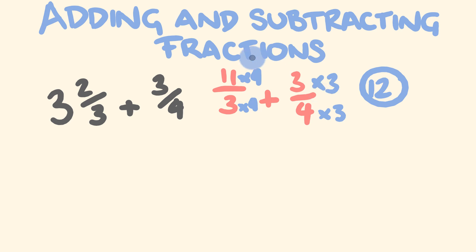So what do we get when we do all that? 11 times 4 is 44. 3 times 4 is equal to 12. And to this, we're going to be adding 3 times 3 is equal to 9. And 4 times 3 is equal to 12. What do we get when we get this? That's 44 plus 9 is equal to 53. And that goes over 12.